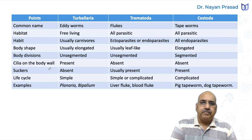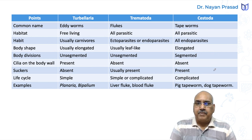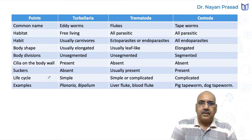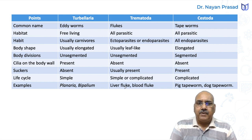Cilia on the body wall: present in Turbellaria, but absent in Trematoda and absent in Cestoda. Suckers: absent in Turbellaria as they are free living; present in Trematoda and present in Cestoda as they are parasitic. Life cycle: Turbellaria simple; Trematoda simple or complicated; Cestoda complicated. Examples - Turbellaria: Planaria, Bipallium; Trematoda: liver fluke, blood fluke; Cestoda: pig tapeworm, dog tapeworm.